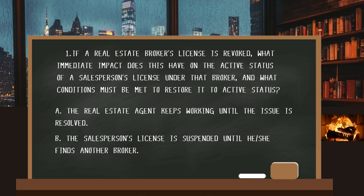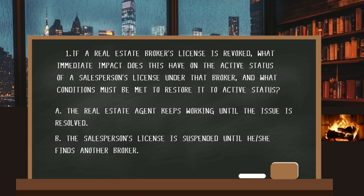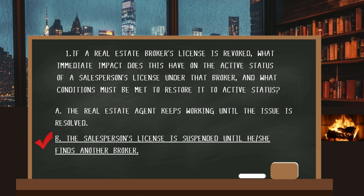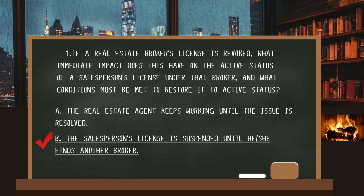Question number one. If a real estate broker's license is revoked, what immediate impact does this have on the active status of a salesperson's license under that broker, and what conditions must be met to restore it to active status? The answer is B: the salesperson's license is suspended until he or she finds another broker. Don't forget, real estate agents cannot work independently from their broker. That's one of the reasons why the real estate license does not go directly to the real estate agent — it goes to their broker of choice.